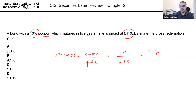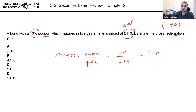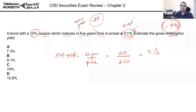Since the bond was bought at 110 and redeemed at 100 nominal in five years, this investor is going to lose 10 pounds of capital on redemption. He's holding the bond for five years, so technically every year he is losing two pounds of his capital — that's 10 divided by five years.